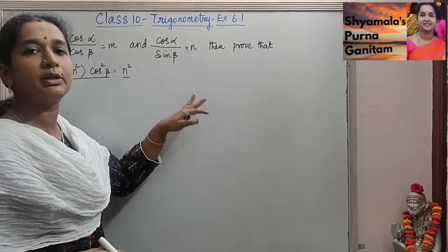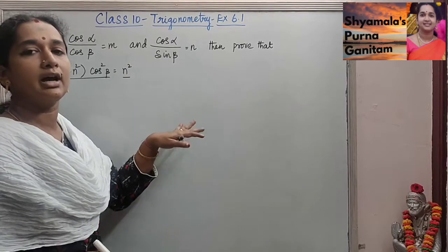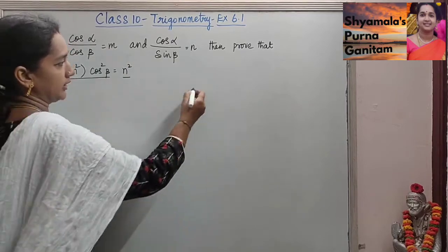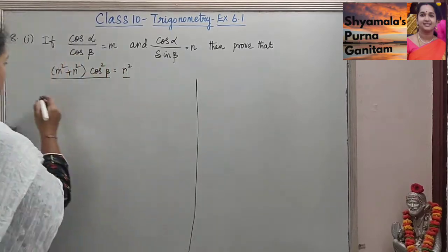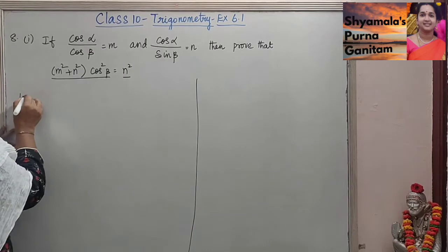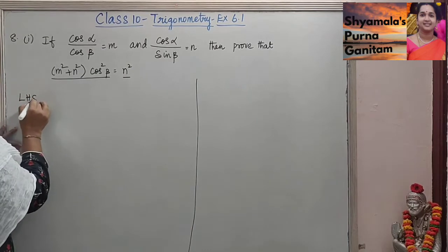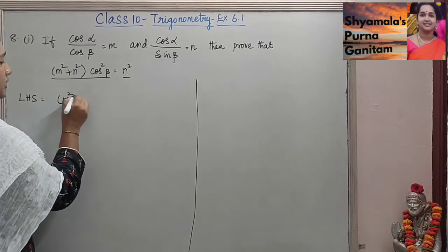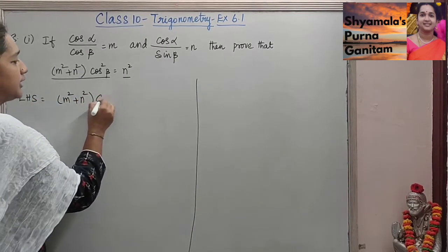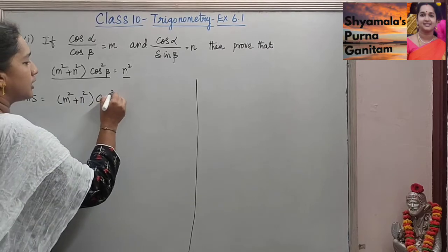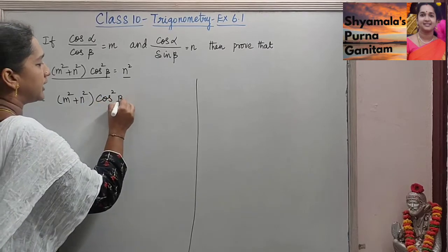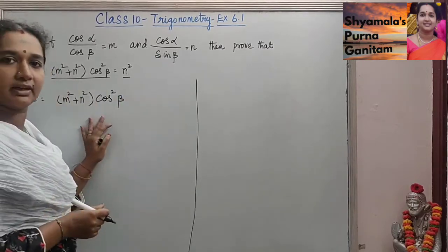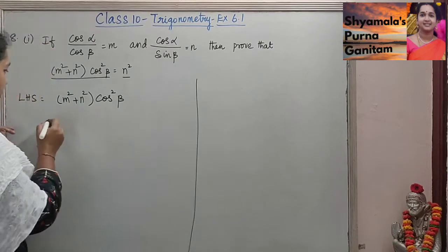We will take the LHS and prove that RHS is equal to n squared. LHS is equal to m squared plus n squared into cos squared β.